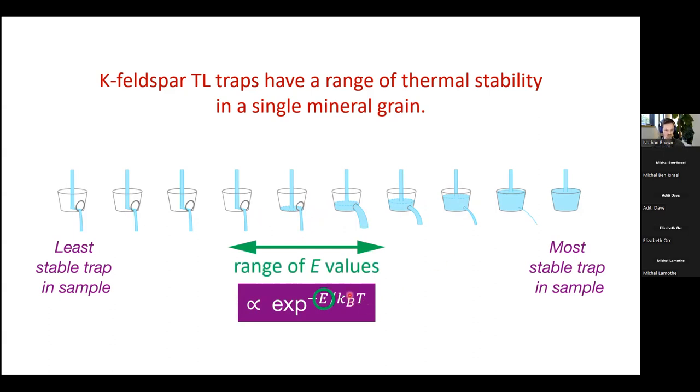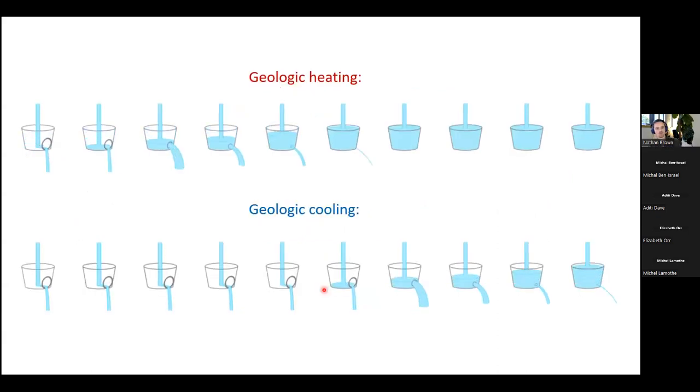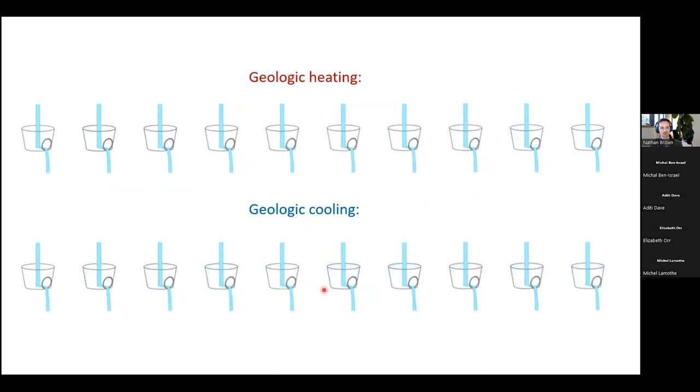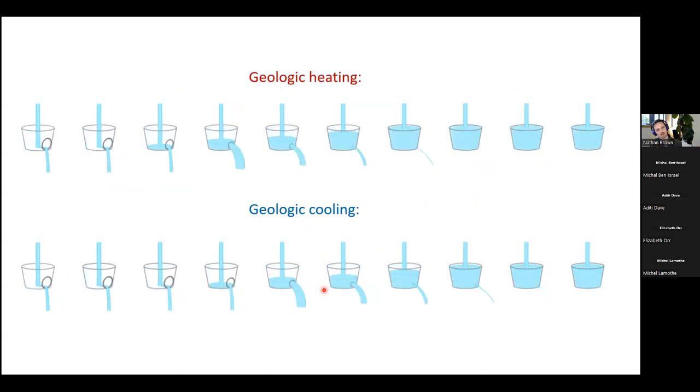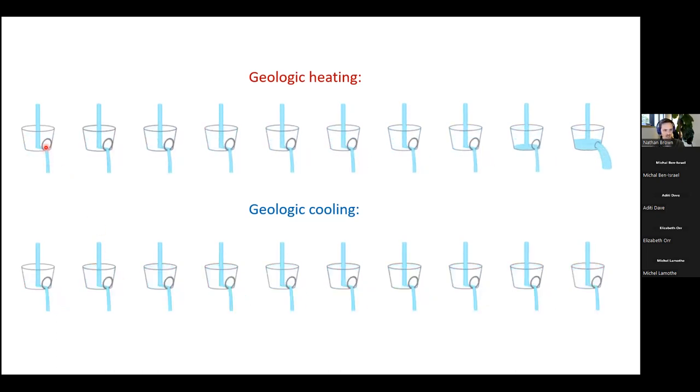So then we could imagine these two simple scenarios. If you start with a totally filled cold sample and you begin to heat it, what you would see is these least stable sites emptying first. And if you continue to heat the sample, eventually even your most stable site will empty.